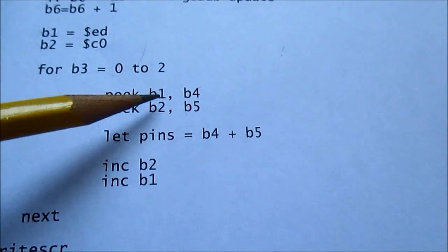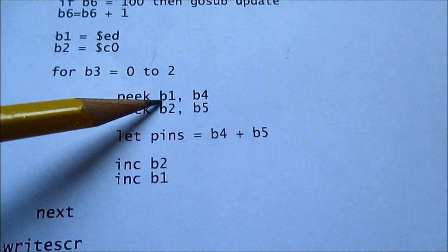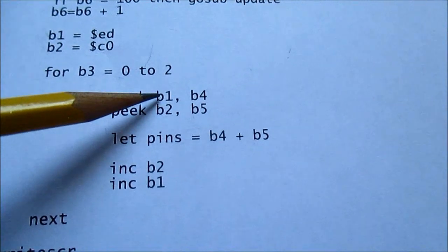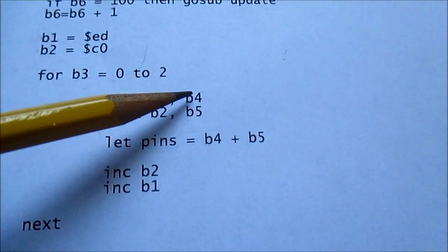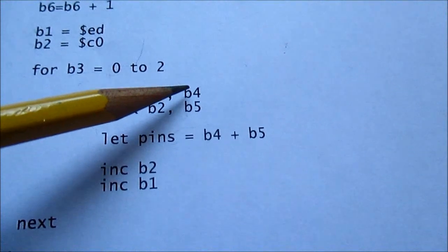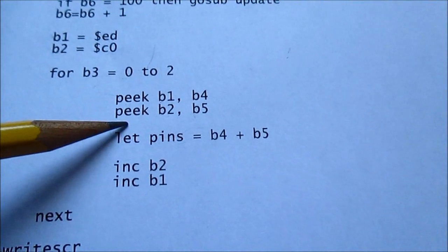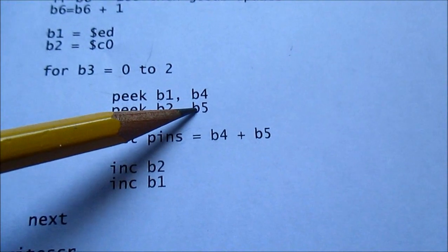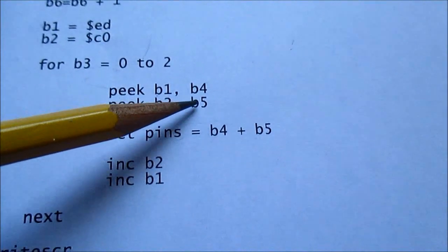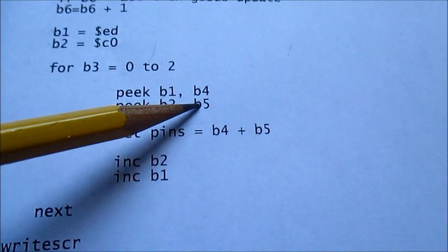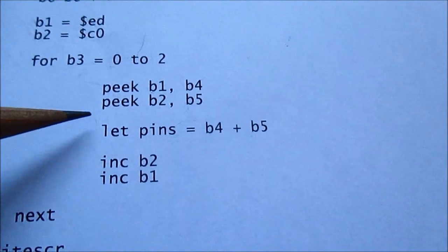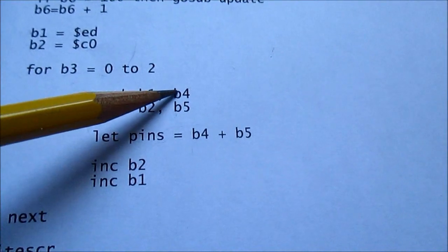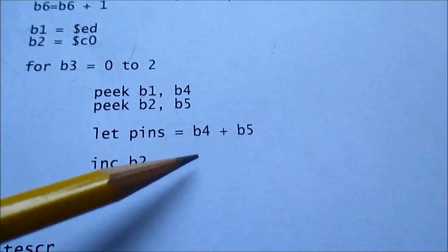So it takes this graphics aperture location and puts the contents of it into this variable. And the first column location puts it into that variable. Puts the actual contents of that memory location into that variable, is what I'm trying to say.